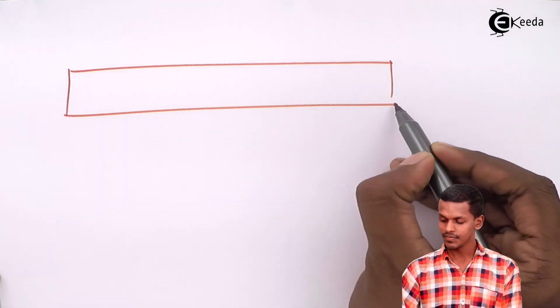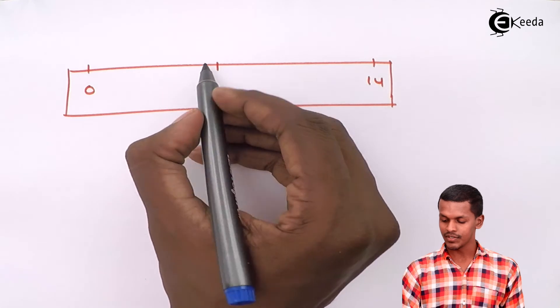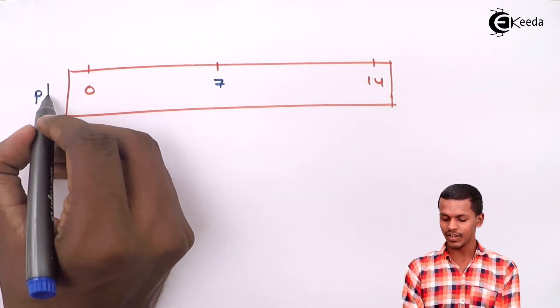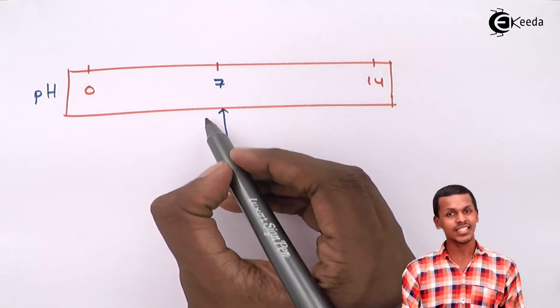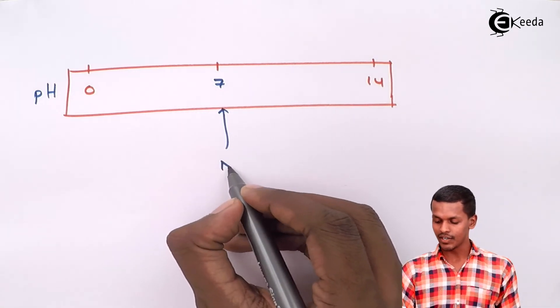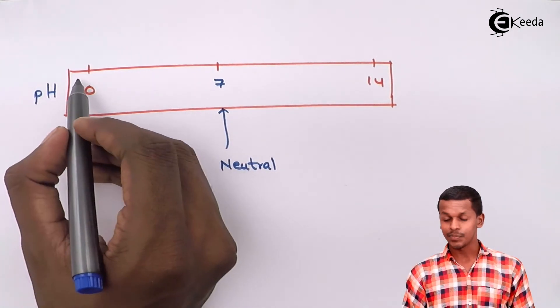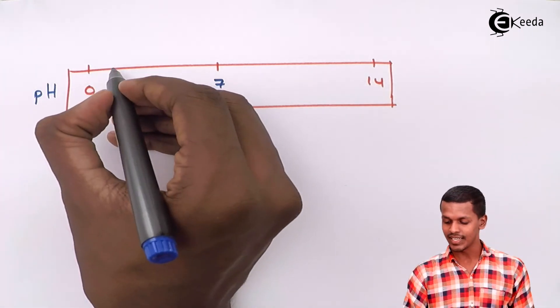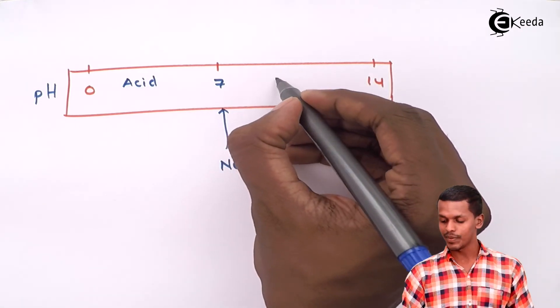Now depending on the pH value, the pH value gives us the strength of that particular acid or base. The pH scale ranges from 0 to 14, with 7 in the middle. If the pH is 7, the solution is neutral — usually water is the one which is neutral. If the pH is between 0 and 7, the solution is acidic, and if pH is between 7 and 14, it is called a base.